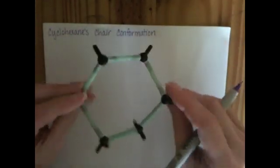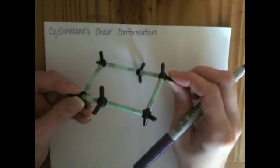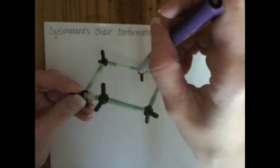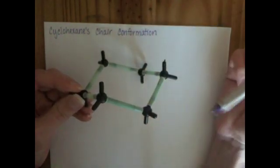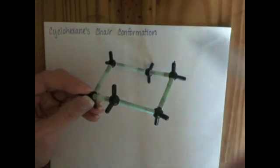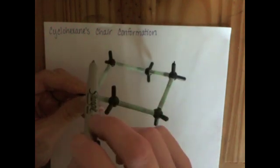The most stable conformation of the cyclohexane molecule looks like this. If you look down at it from this particular angle, you can see the shape of the conformation. This conformation is called the chair structure or the chair conformation of cyclohexane because in somebody's wild imagination, it kind of resembles a chair.